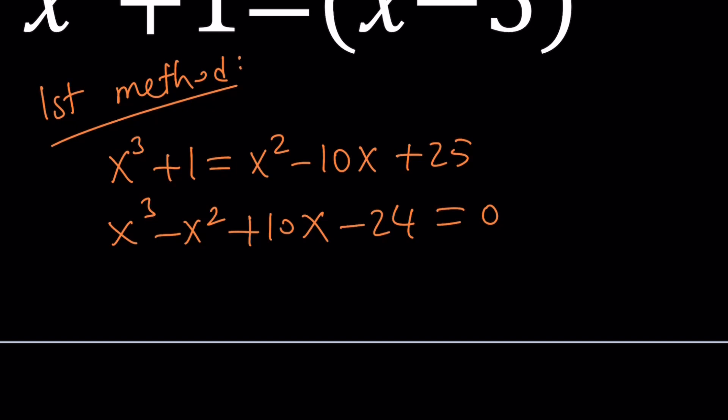1 minus 25 is negative 24, and this is what we get. Now when you look at this equation, do you think it's factorable right away? Is there any rational solutions? We can quickly check by looking at the factors of 24. Well, it's not going to be real quick, it's going to take some time.